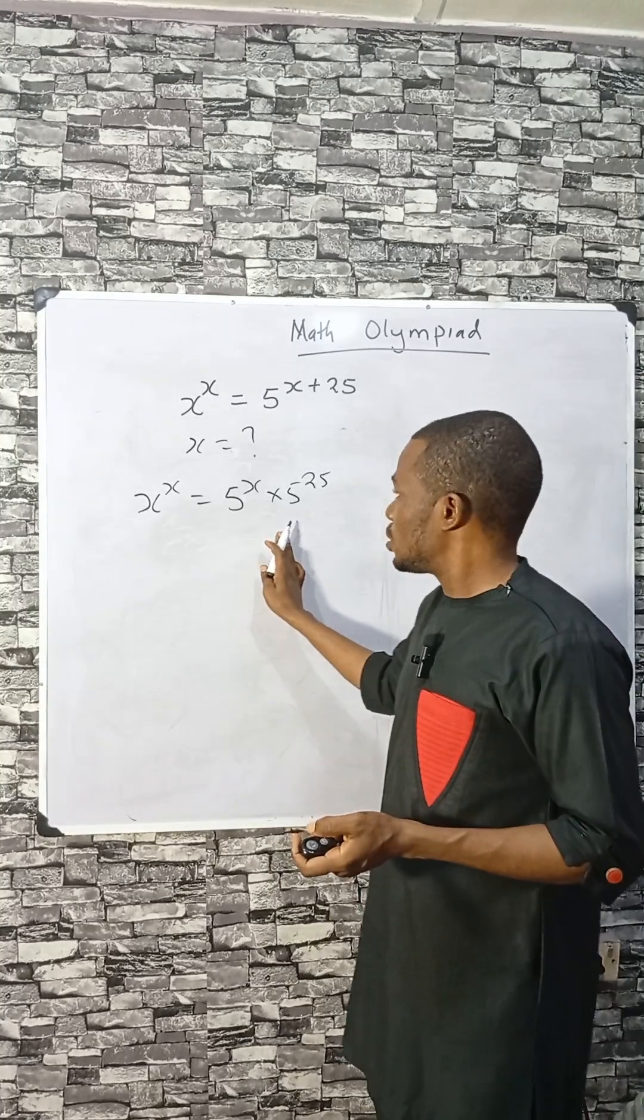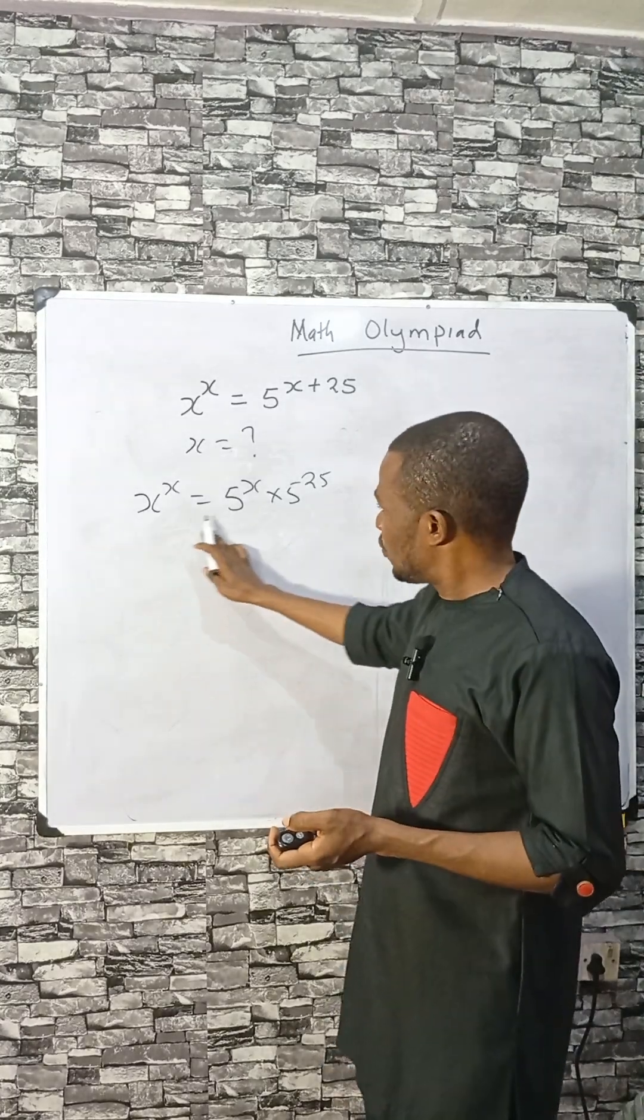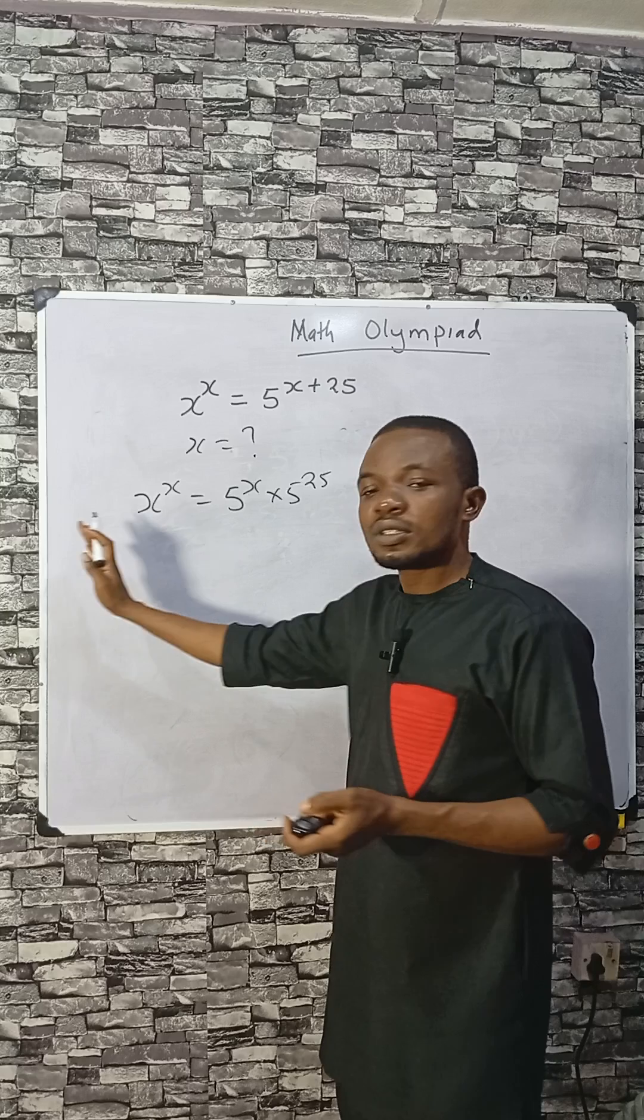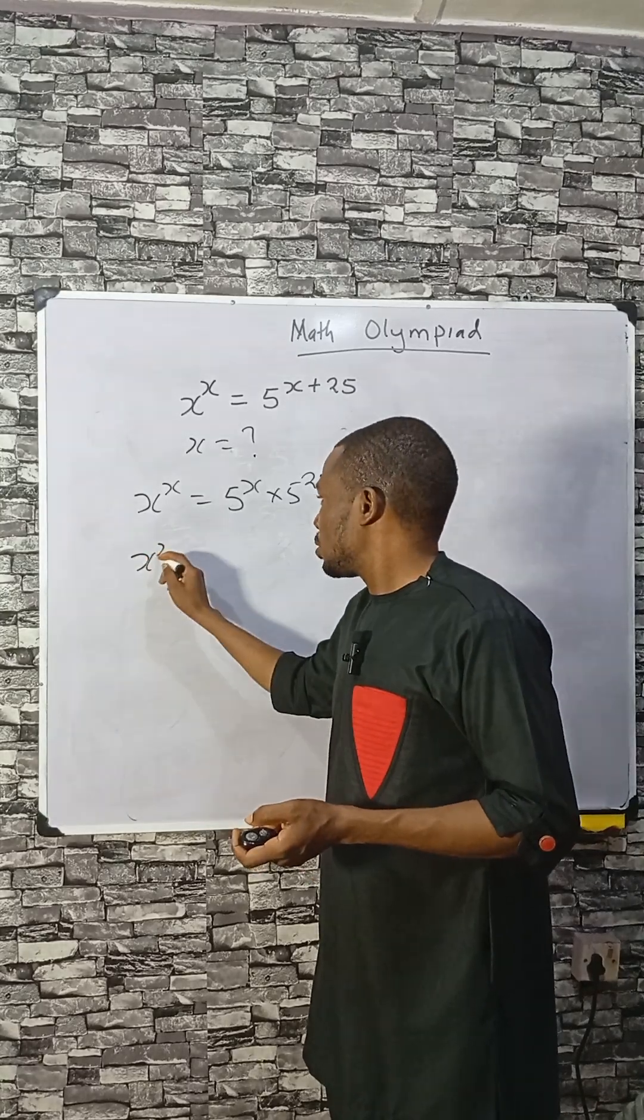It's permitted by indices. Now let's divide through by 5 raised to the power x so that we can move x to one side. That will be this.